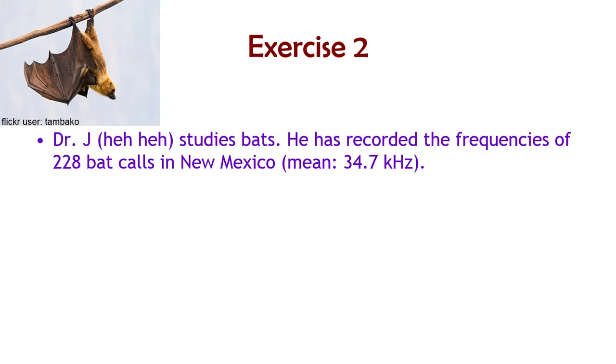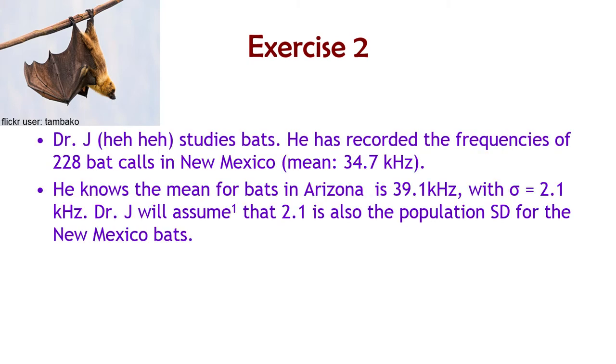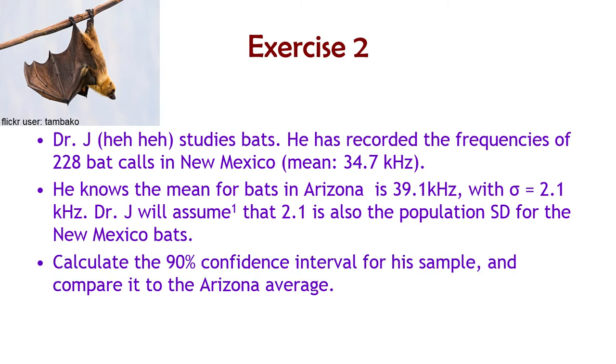So exercise number two. Dr. Jay studies bats. He's recorded the frequencies of 228 bat calls in New Mexico, and the mean is 34.7 kilohertz. He knows the mean for bats in Arizona is 39.1 kilohertz, and that the Arizona bats have a standard deviation of 2.1. So he's going to assume that 2.1 is also a reasonable estimate for the standard deviation for the New Mexico bats. Calculate the 90% confidence interval for his sample, and also compare it to the Arizona average.